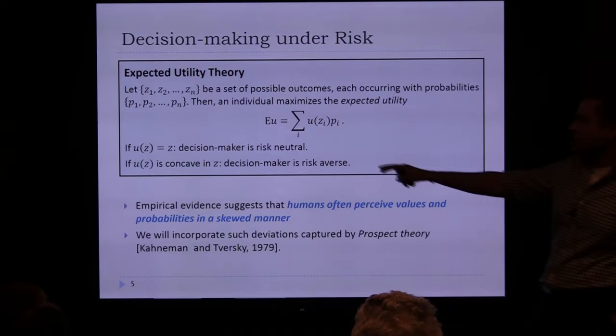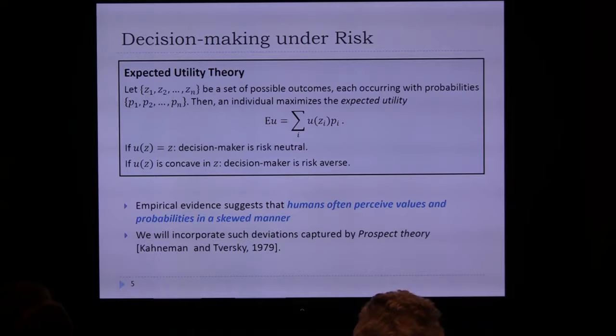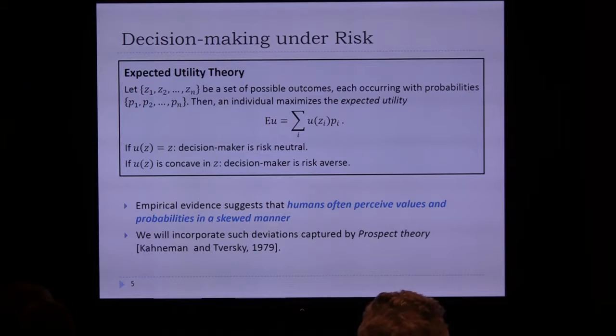They take the expected value of U to determine how they perceive the value of this outcome. If U(Z) equals Z, this is just the expected value — these are risk neutral individuals. If U(Z) is concave in Z, individuals are known to be risk averse. By Jensen's inequality, they will always prefer sure outcomes to uncertain outcomes.